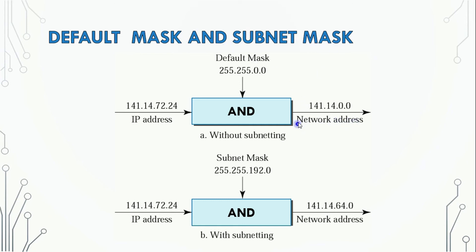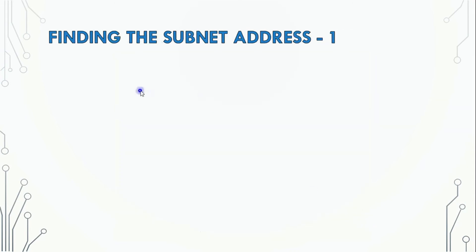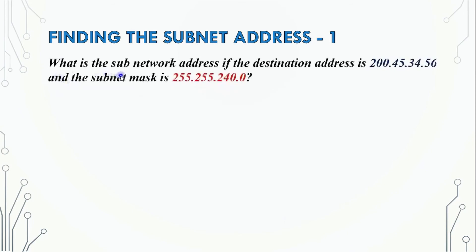The subnet mask is used with an AND operation to give you the subnet address from an IP address. For example: what is the subnet address if the destination address is 200.45.34.56 and the subnet mask is 255.255.240.0? We perform an AND operation to find it.